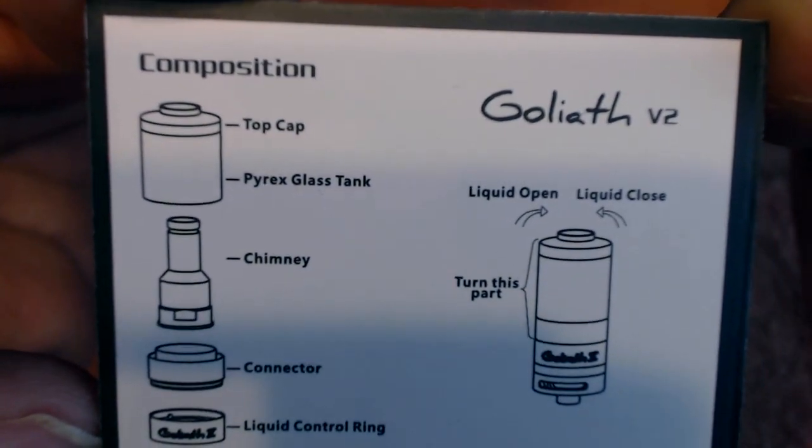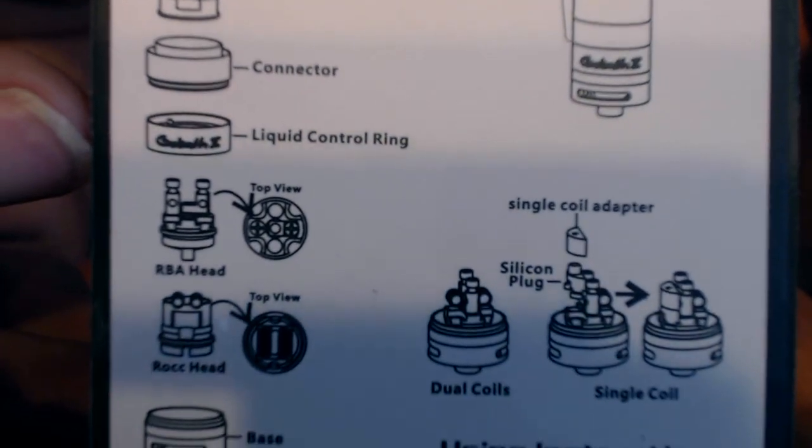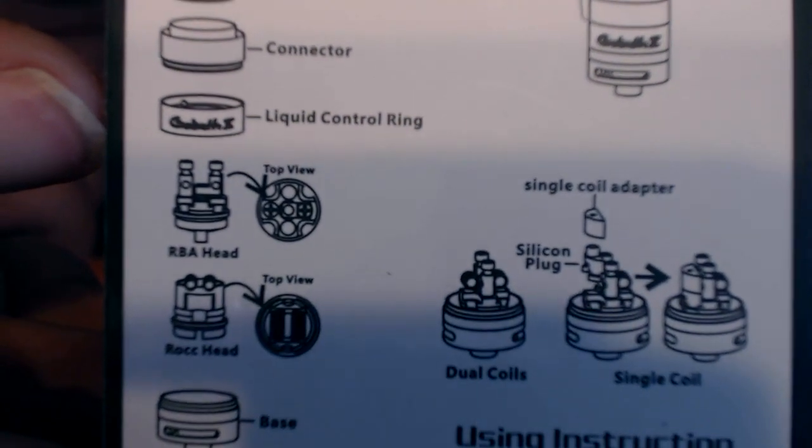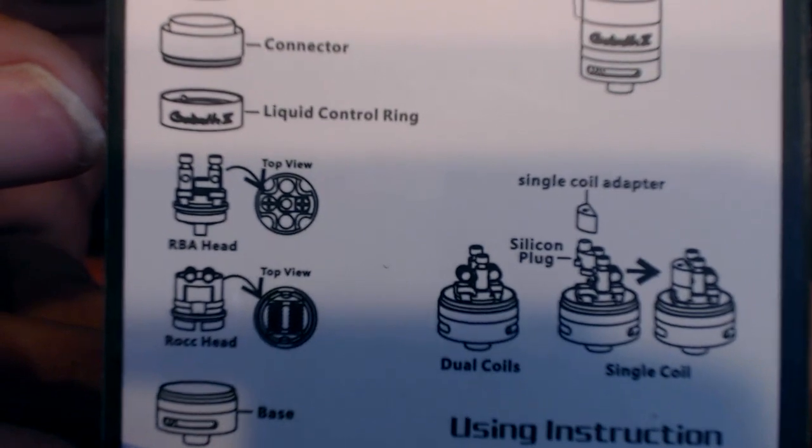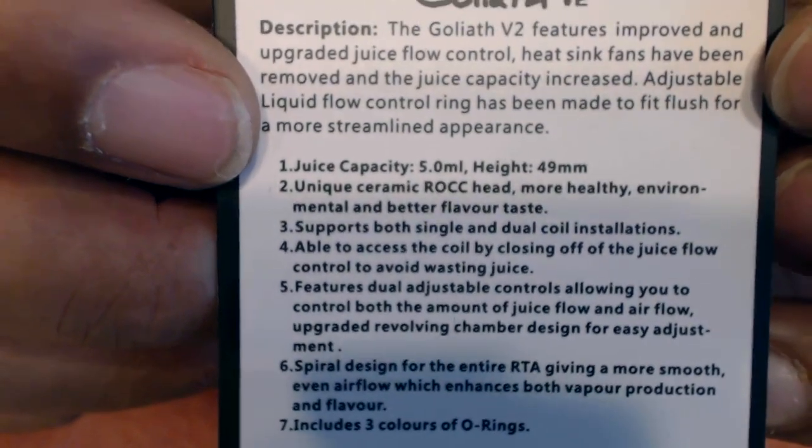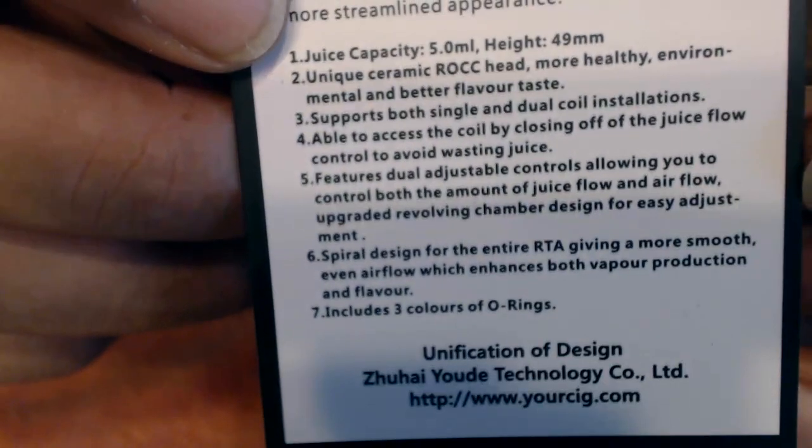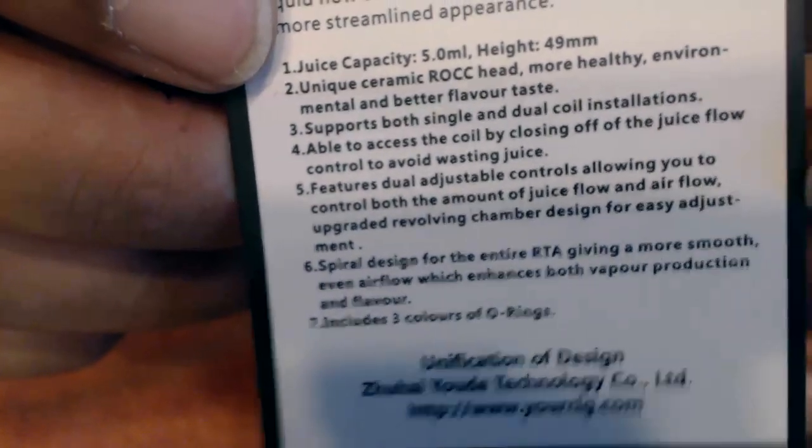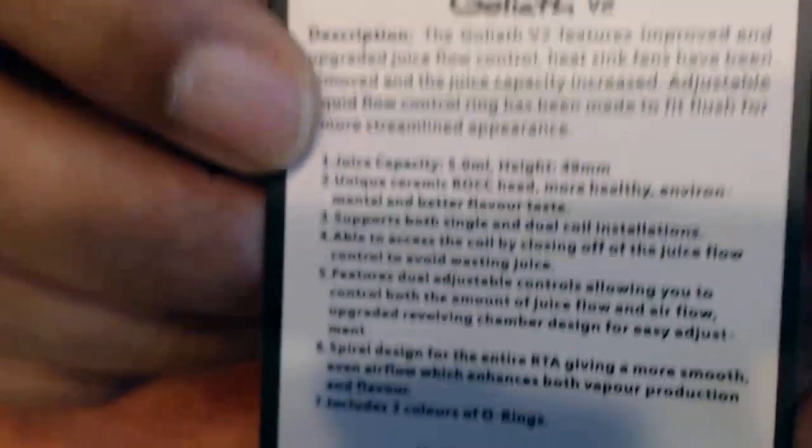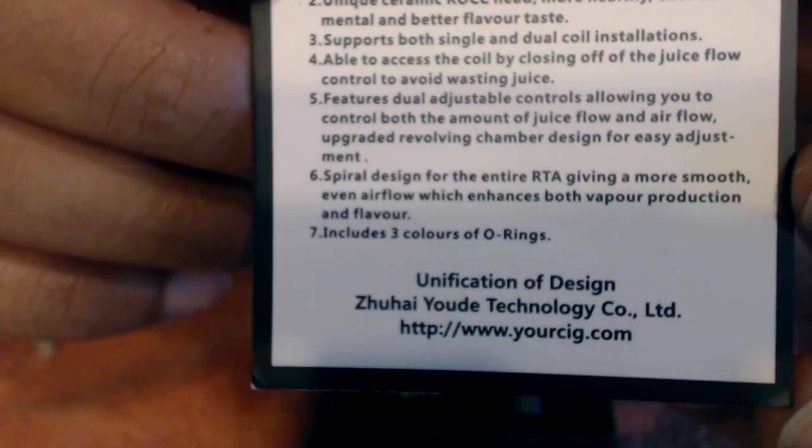And I'm not sure if this is going to be the final production box. But I do know my Goblin Mini came in a box like so. When you open it up, you get this little instruction pamphlet. It tells you how to open it, how to fill it, the parts, how to close off to make it single coil.